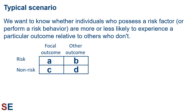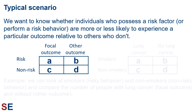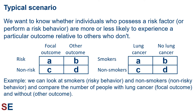The typical scenario is that we want to know whether individuals who possess a risk factor or perform a risk behavior are more or less likely to experience a particular outcome relative to those who don't. We look at the risk and non-risk groups separately and count how many observations or individuals end up in the category corresponding to the focal outcome, and how many end up in the category representing the other outcome or outcomes. We set this up with the risk factors as the rows and the outcomes we care about as the columns. The convention of using the letters A, B, C, and D to represent the numbers in each category is standard, but not universal.